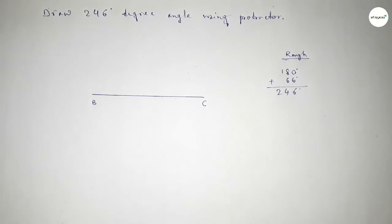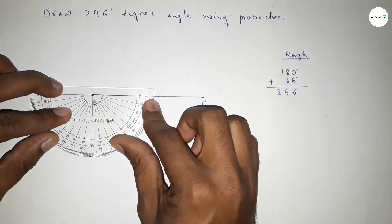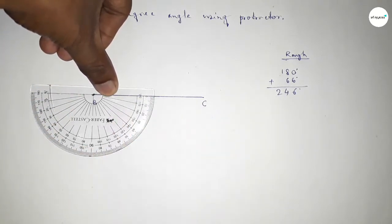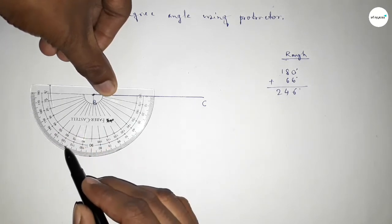Putting the protractor on point B this way and counting a 66-degree angle. So this is 180 degrees, and this is also starting at 0, 10, 20, 30, 40, 50, 60, 65, and this is 66.